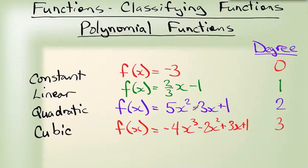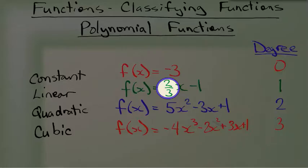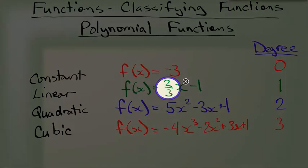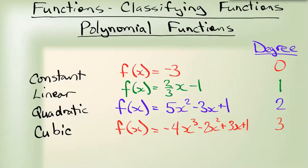So valid powers are 0, 1, 2, 3, 4 — no decimals, no fractions. Those powers must all be positive numbers. It's okay if you have a coefficient in front, and it's okay if that coefficient is a fraction, but the power on the X cannot be.